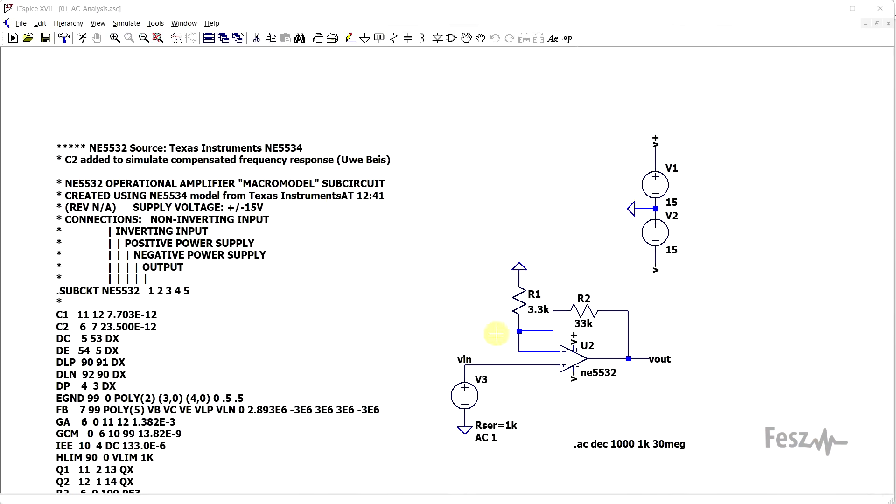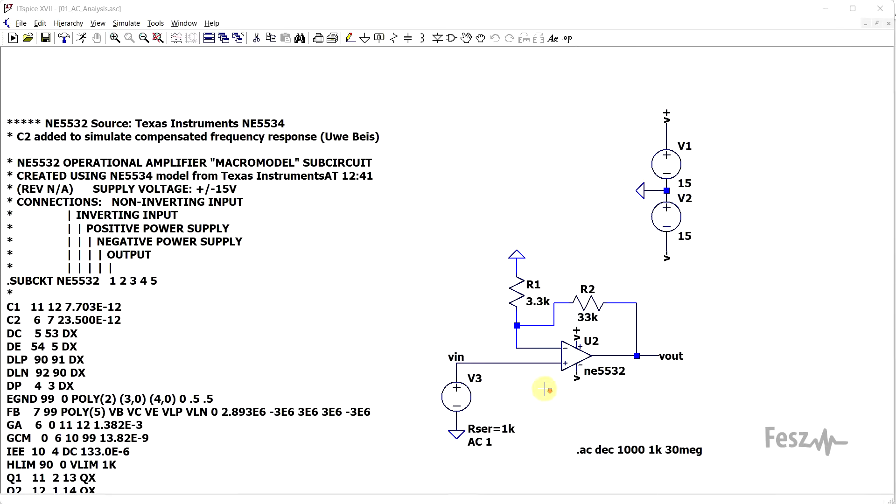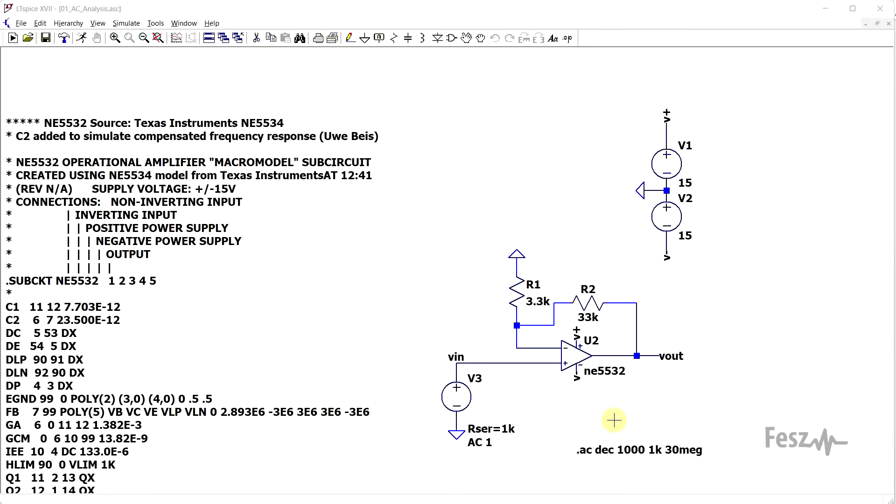So, what I have here is an op-amp model I found online, and the basic x11 non-inverting amplifier configuration that we've been using until now. So, with this basic setup, we can do an AC type of simulation to get the small signal behavior.